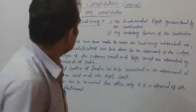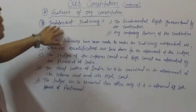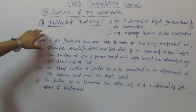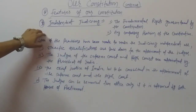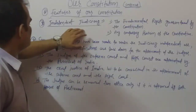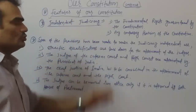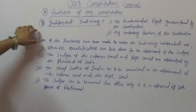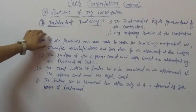The next point we discuss is the independent judiciary. The constitution establishes an independent judiciary. The judiciary can declare a law unconstitutional if it is against the constitution.